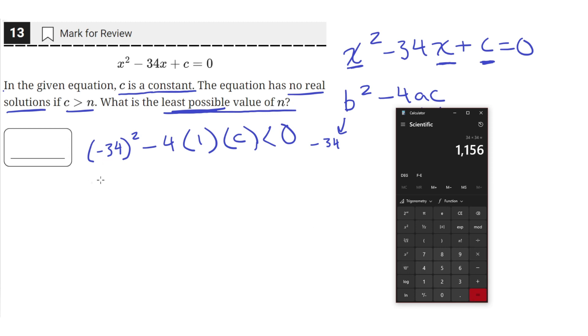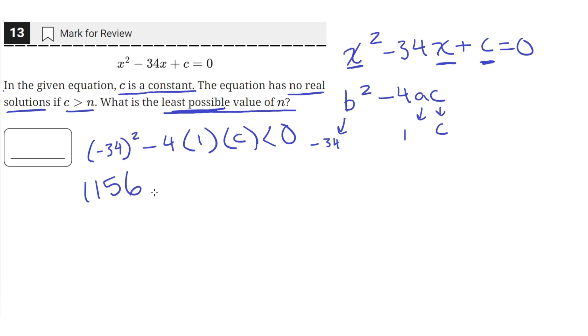We just distributed the negative 4. This has to be less than 0. So now let's isolate for 4c.